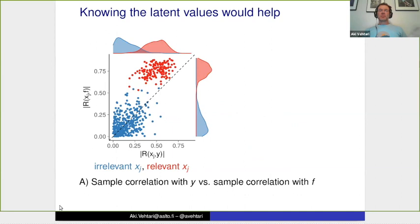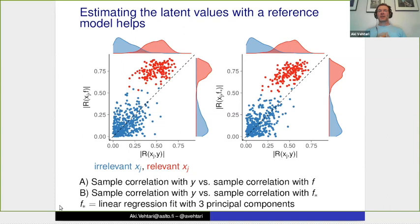Here's the same illustration in a different form. On the X-axis, correlation between X and noisy Y; on the Y-axis, correlation between X and latent F. On the marginals you can see the overlap in correlations when comparing X versus Y, and much less overlap when comparing X versus F. If instead of F you use F*, the estimated latent value, it's quite similar. So the reference model helps here a lot.